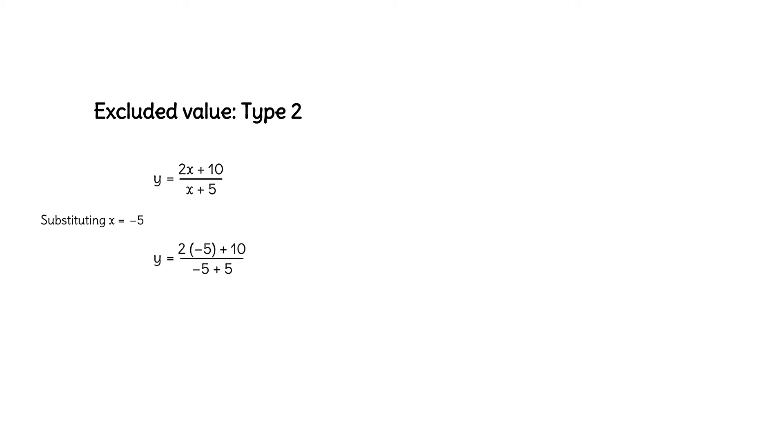But something very strange happens when we substitute negative 5 for x. We get 0 in the numerator and in the denominator. What is 0 over 0? It's also undefined. So negative 5 is an example of the second type of excluded value.